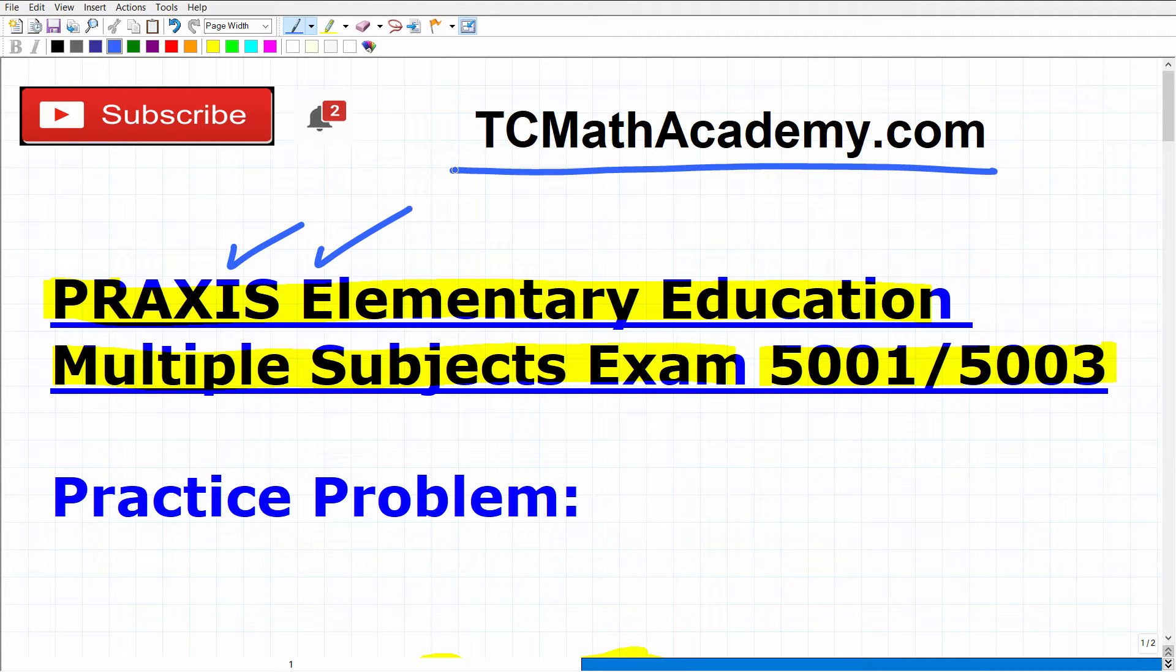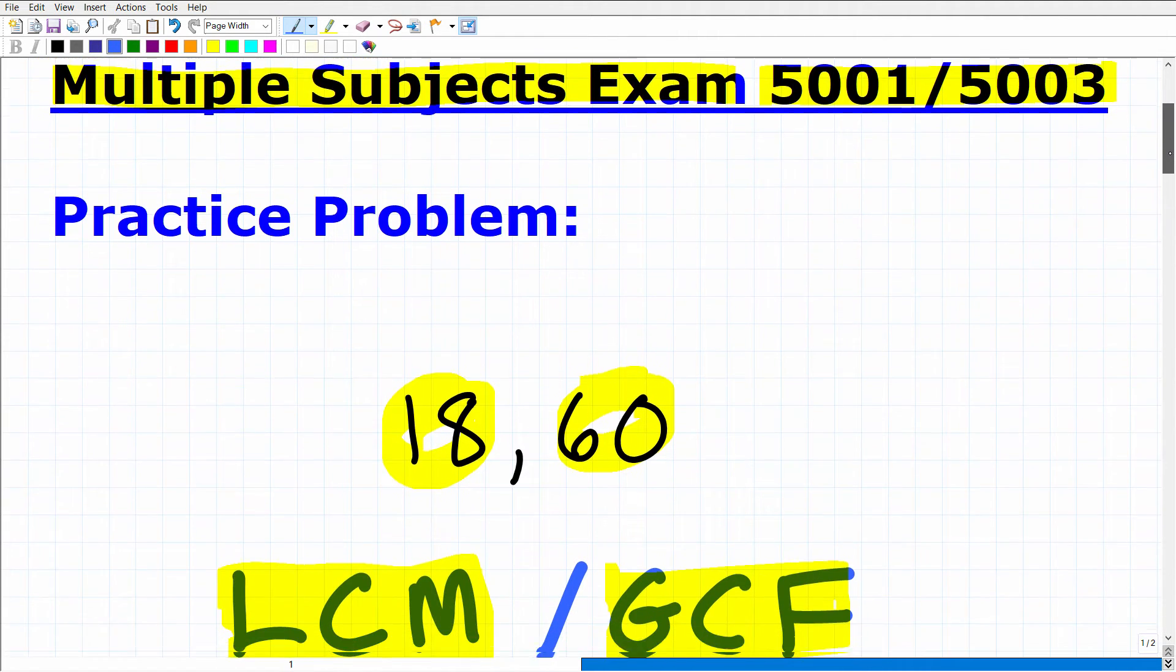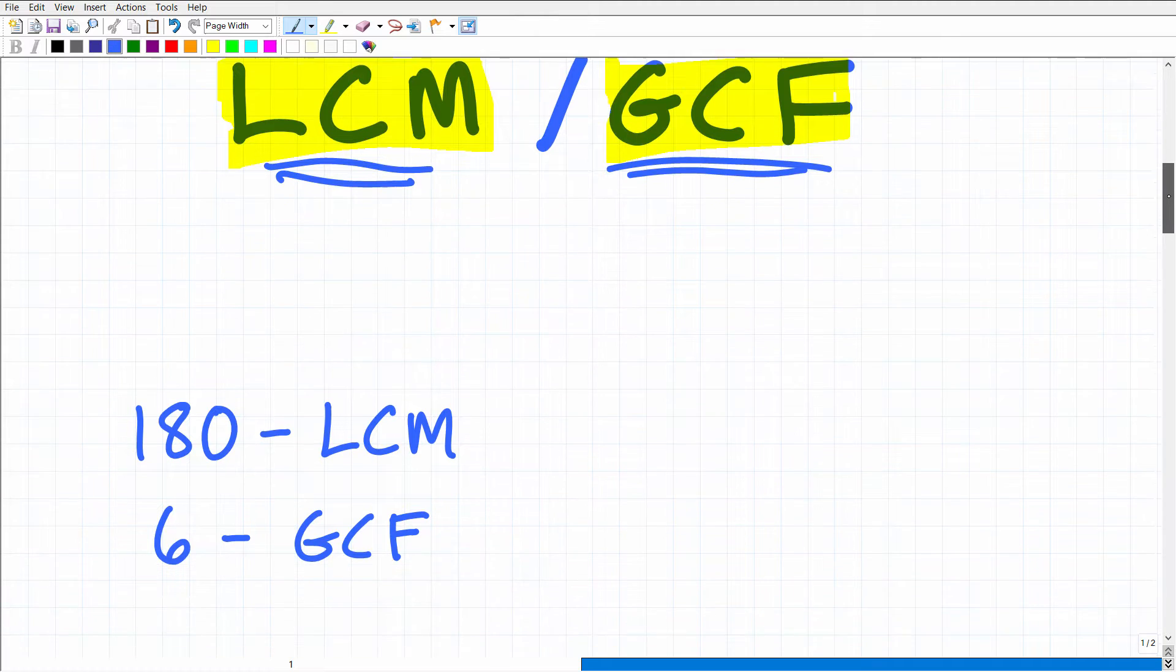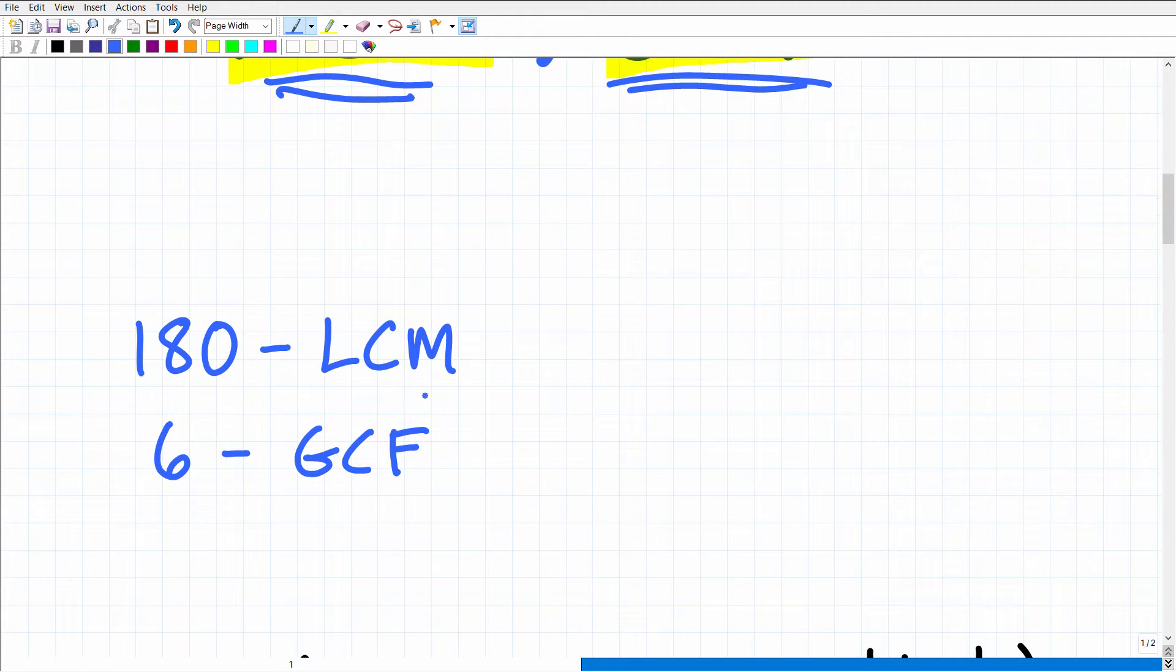But anyways, let's go ahead and get into this problem. So we have 18 and 60. We want to find the least common multiple and the greatest common factor. So it's basically two questions with these two numbers. Let's go ahead and take a look at the answer. So the answer is the following. So we got 180 for the LCM and 6 is the GCF, right? So greatest common factor, least common multiple.